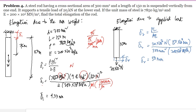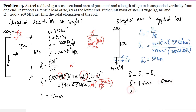For the total elongation, we add the elongation due to its own weight and the elongation due to the applied load: δ_total = 4.33 mm + 50 mm = 54.33 mm. This is our final answer.